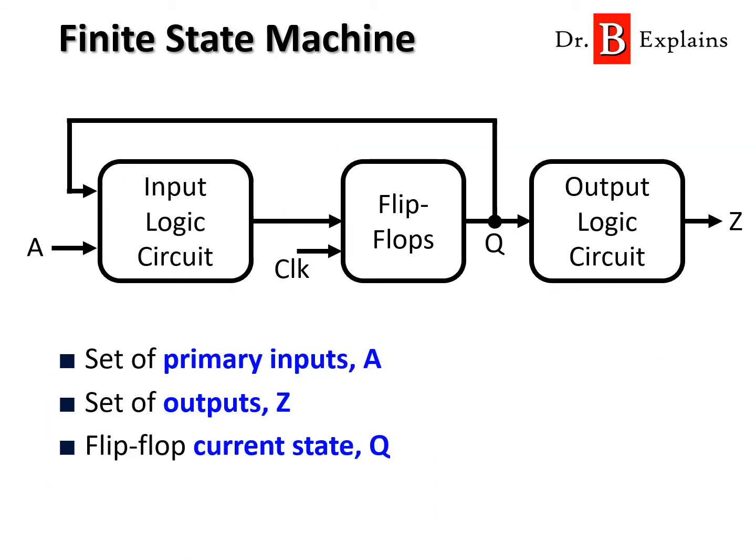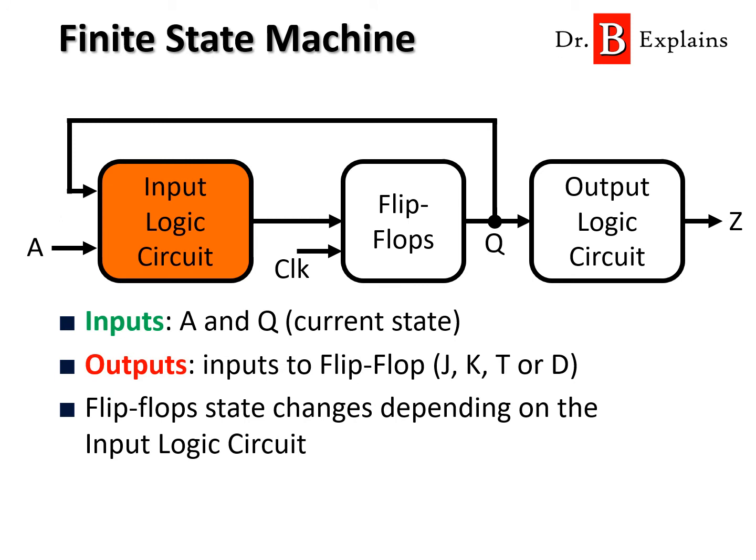The general structure of finite state machines is composed of an input logic circuit block, flip-flops, and an output logic circuit block. It has a set of primary inputs and a set of outputs, and also one or more flip-flops. The stored values in the flip-flops represent the state of the circuit. The input logic circuit receives A and Q as inputs and produces a set of outputs that will be fed to the flip-flops.